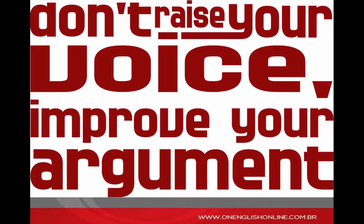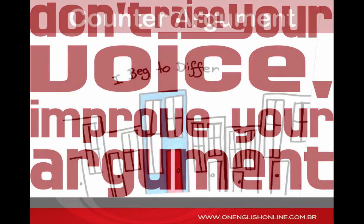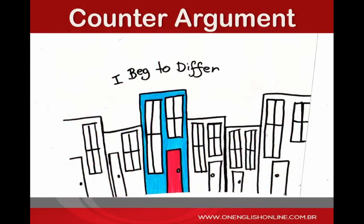In argumentative writing, an effective technique is to include at least one sentence with an opposing opinion — an opinion that disagrees with your point of view. At first, this seems to be not a very good idea, but it is common to state one point of view that disagrees with your own. This is called a counter-argument. This counter-argument is then followed by a statement that refutes or diminishes the counter-argument. This is called a refutation because you refute the counter-argument.